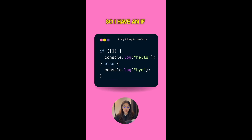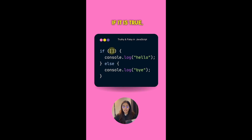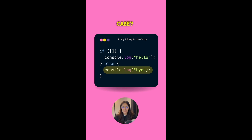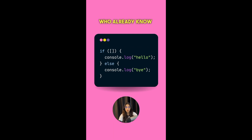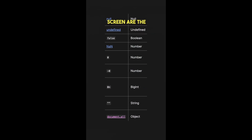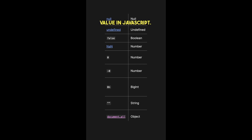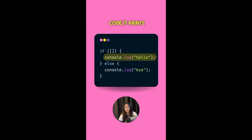I have a practice question for you. I have an if statement whose condition is an empty array. If it is true it will print 'hello'; if it is false it will print 'bye'. What will be the output? The answer is simple for those who know truthy and falsy values. There are nine falsy values in JavaScript — an empty array is not among them, so it is a truthy value. That's why running this code prints 'hello' to the console.